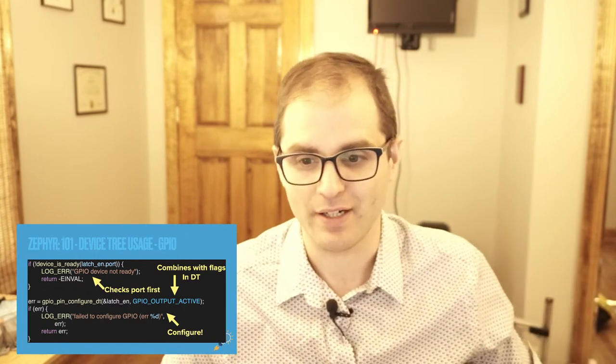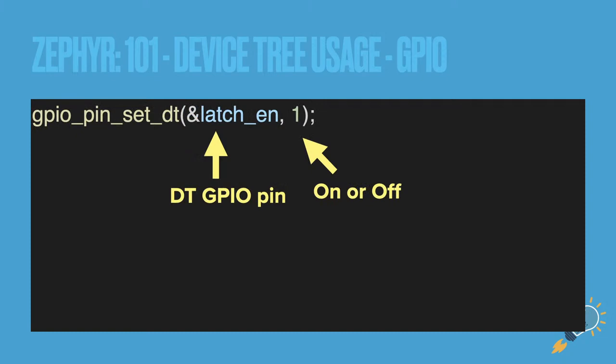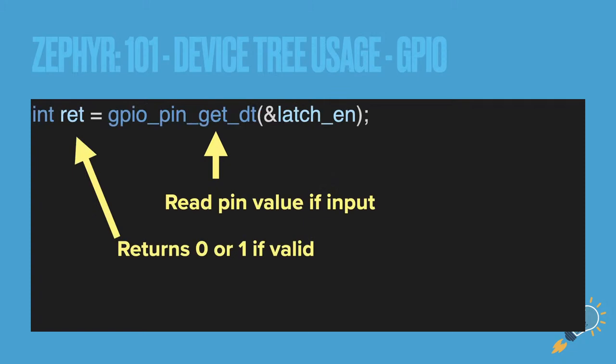In this case we're setting it to the GPIO active state, which was active high. That's it for configuring it. If you want to set the pin, you use `gpio_pin_set_dt` and pass either zero or one — that's literally just setting the state. And if you want to get the state, say you configured it as an input, you can use `gpio_pin_get_dt` to get the state of that pin.